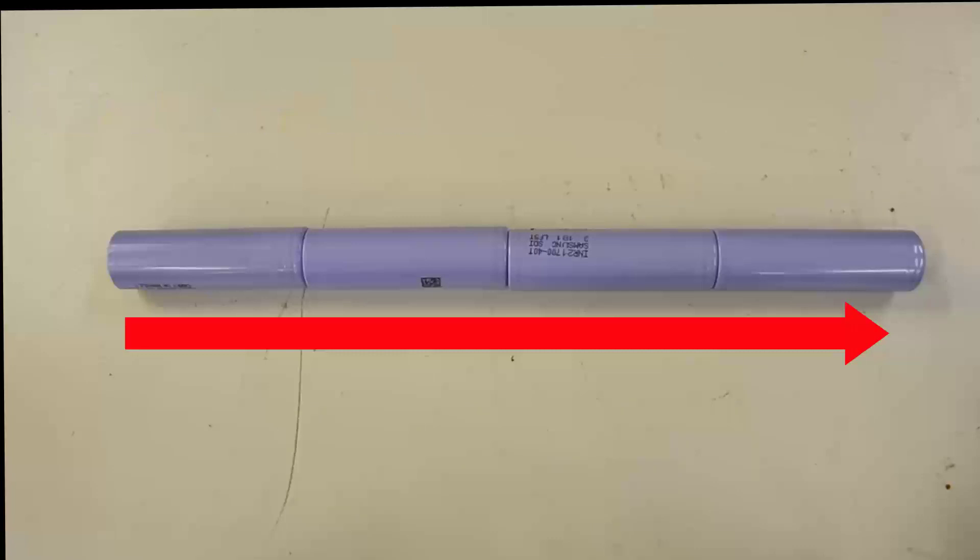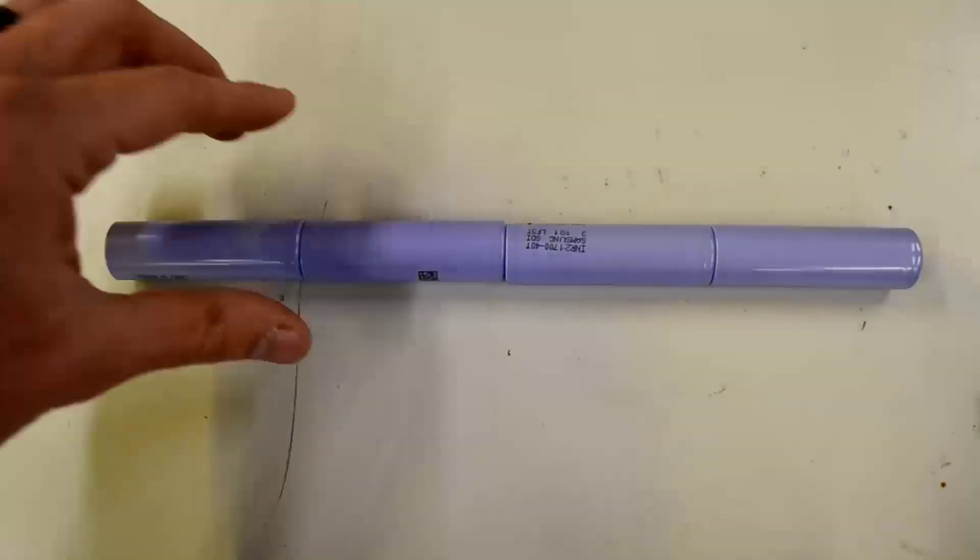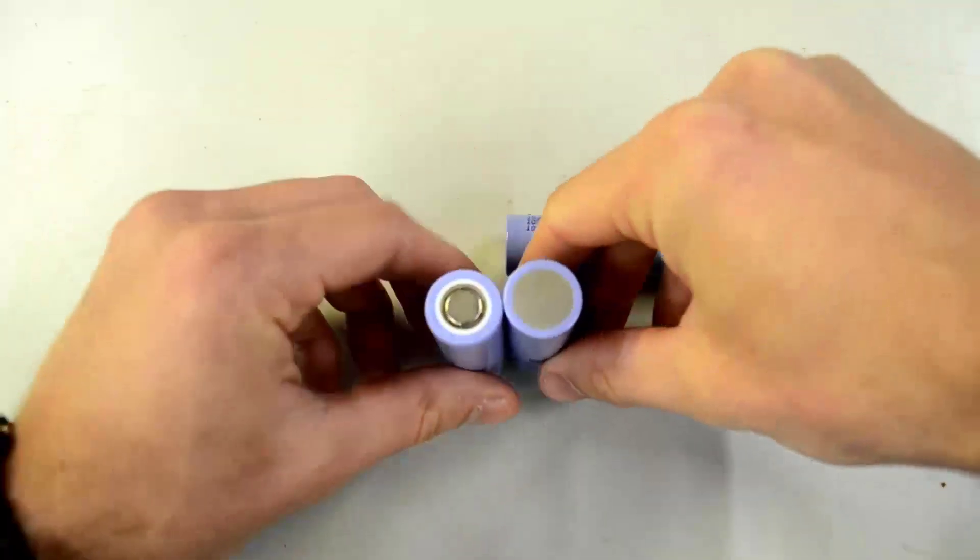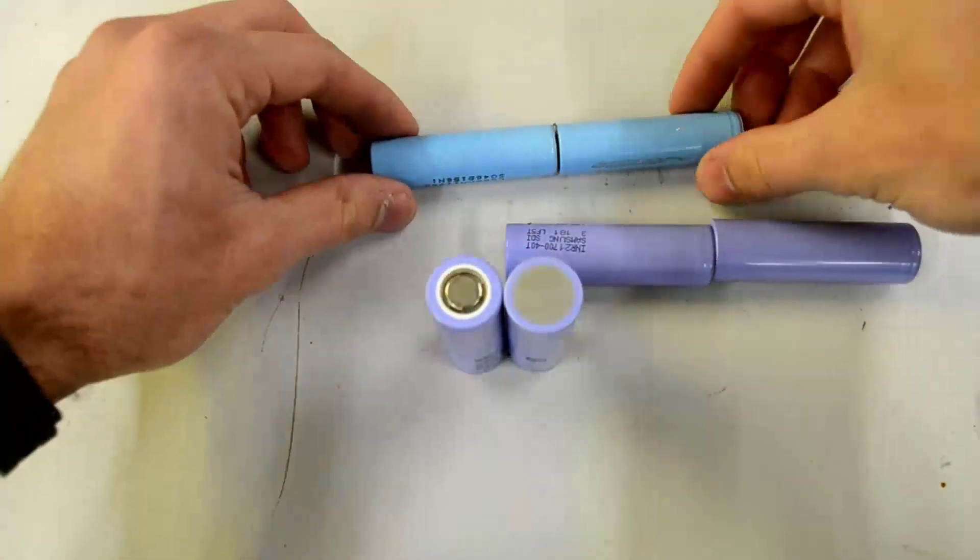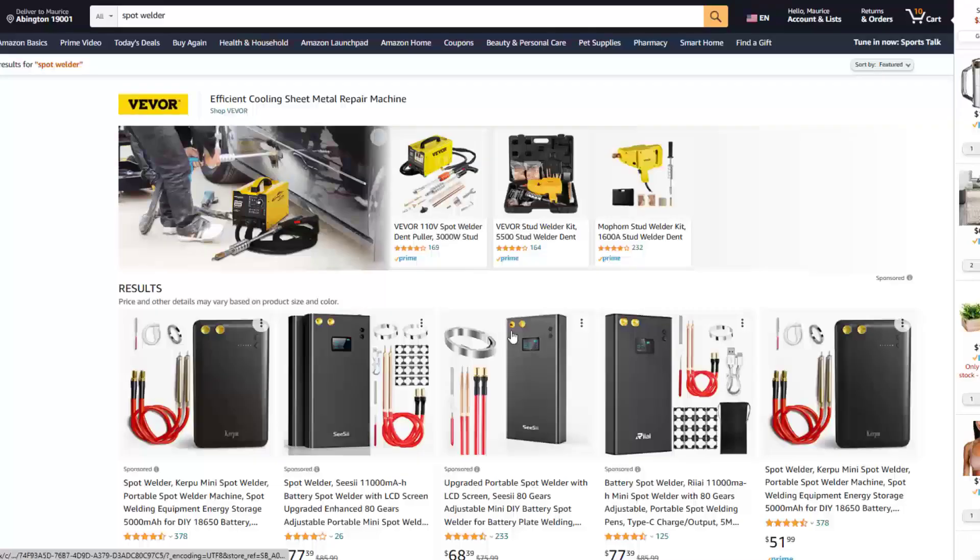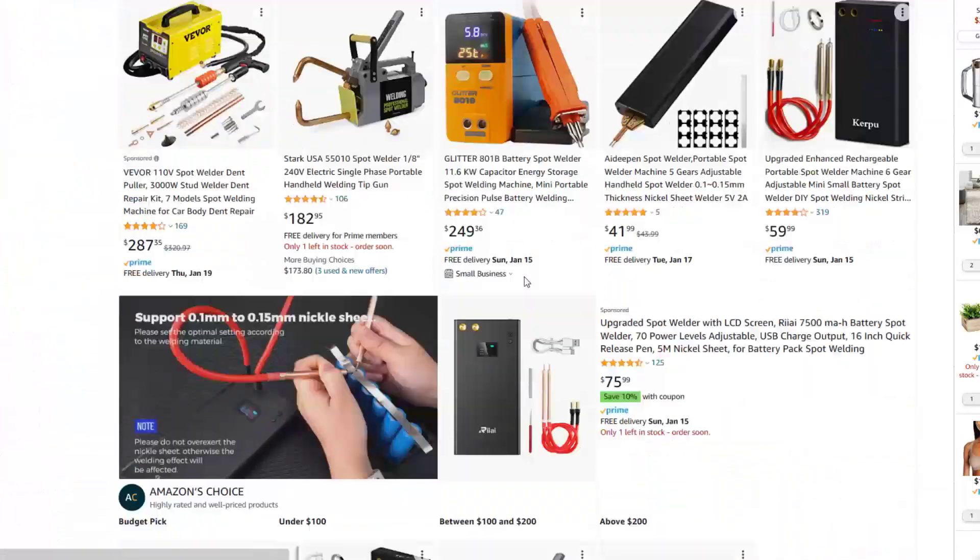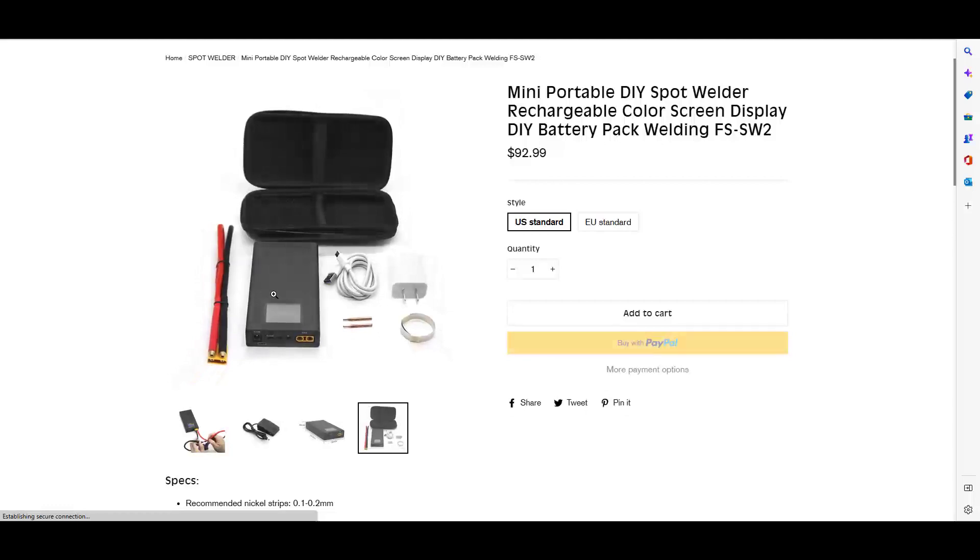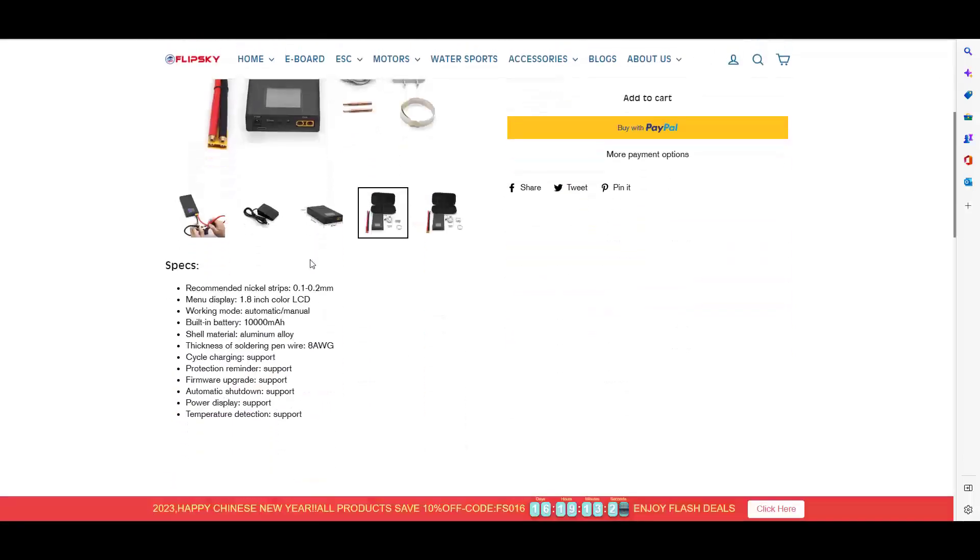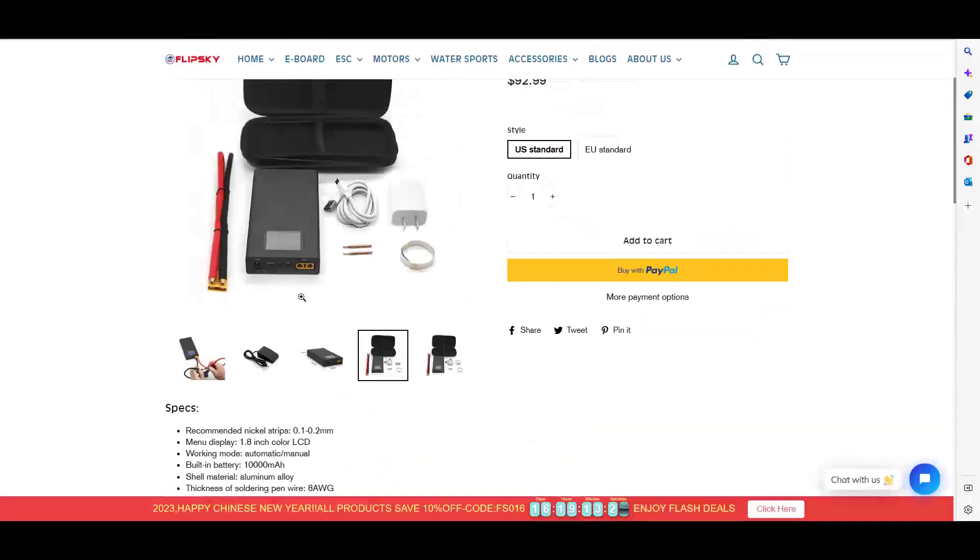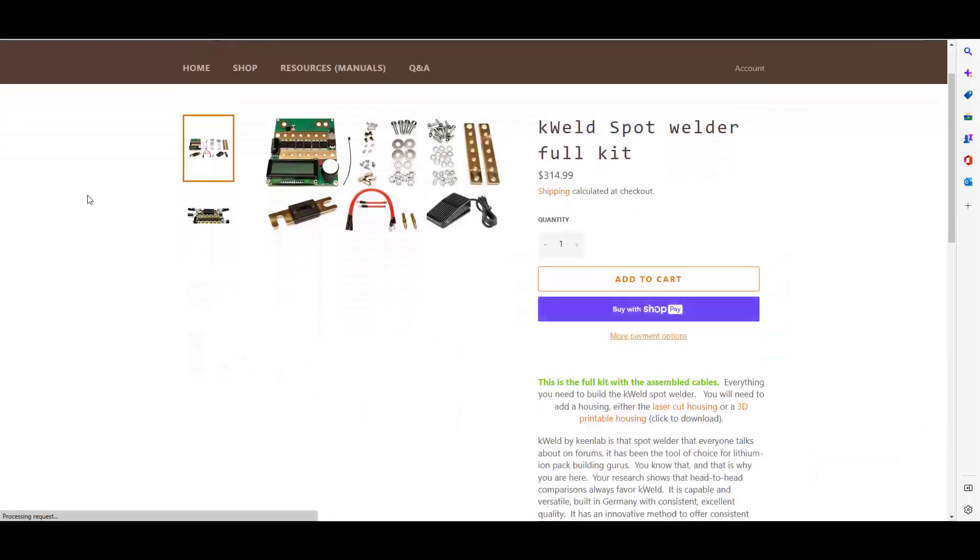Now, of course, they don't have to look like this. You can spot weld them together just like this, but in order to do that, you're going to need a spot welder. Here's a couple of looks at some spot welders. Amazon has plenty. You can also get one from Flipski. This one works really well, or if you want to go all out, you can get a K weld. We have one of these as well, and they are beast.